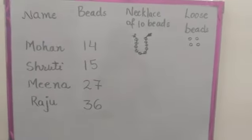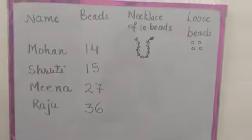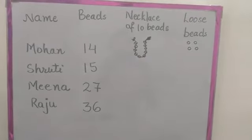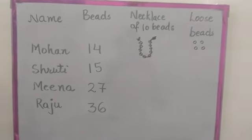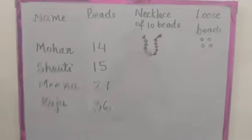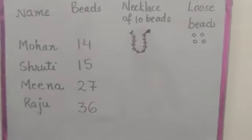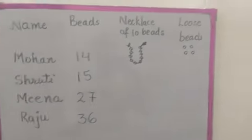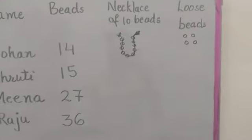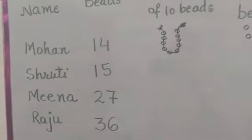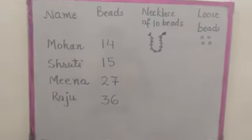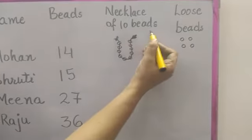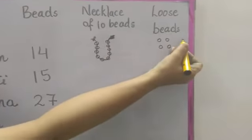Good morning students! Today we are going to start a new chapter: Give and Take. For this, I am going to tell you a story. Four friends want to decorate their classroom, and for decoration they need beads. So they all went to the shopkeeper. The shopkeeper had a necklace of 10 beads and loose beads.